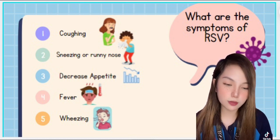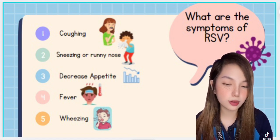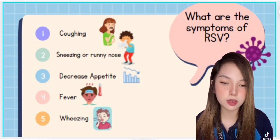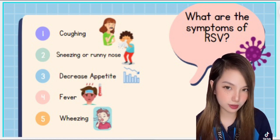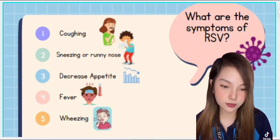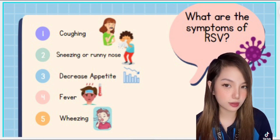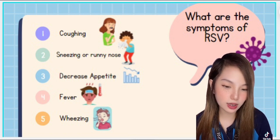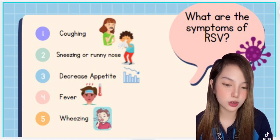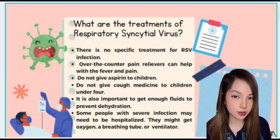These symptoms usually appear in stages instead of all at once. In very young infants, the only symptoms may be irritability, decreased activity, and trouble breathing. RSV can cause more severe infections especially in people at high risk, including bronchiolitis — an inflammation of the small airways in the lung — and pneumonia, an infection of the lungs.